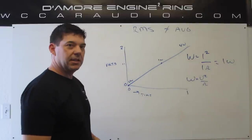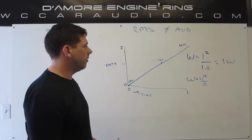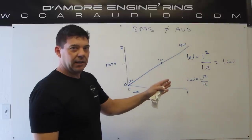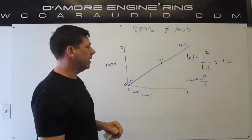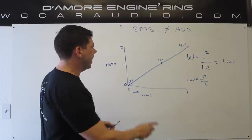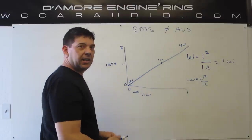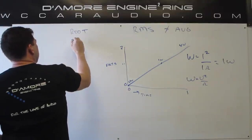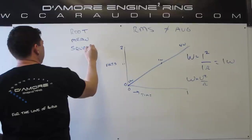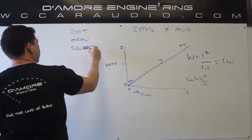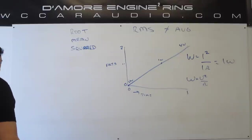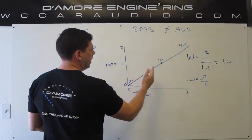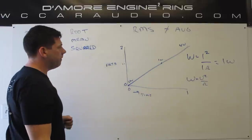I'll do the RMS calculation for a sine wave so we can see how that works, but hopefully that right there shows you that you can't take the average voltage to calculate the power. It has to be the RMS voltage when we're talking about an AC sine wave. So let's talk about what the RMS of this straight-line signal is. RMS means root mean squared. To calculate RMS you take a bunch of samples and perform this root mean squared function.